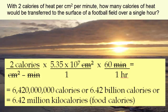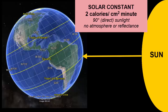That gives us 6.42 billion calories, or 6.42 million kilocalories — the food calories that we are more familiar with. First, on any day there will only be one latitude on Earth's surface with a 90 degree angle of incoming radiation.